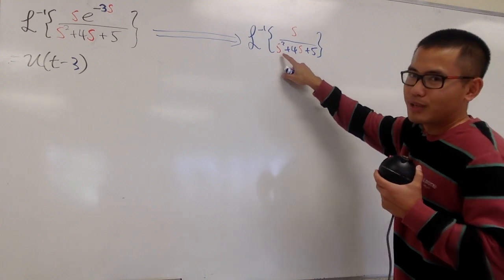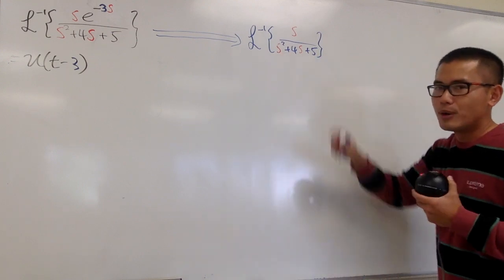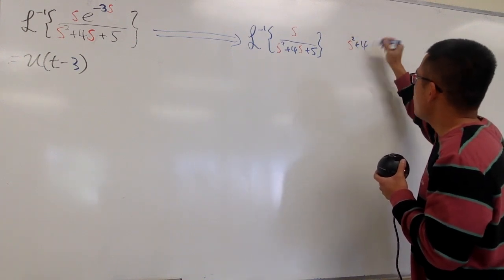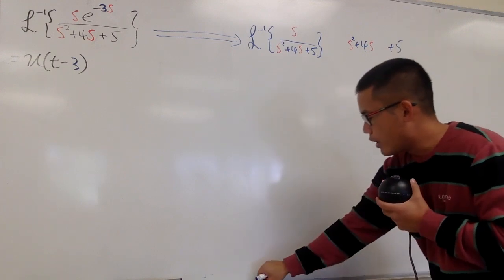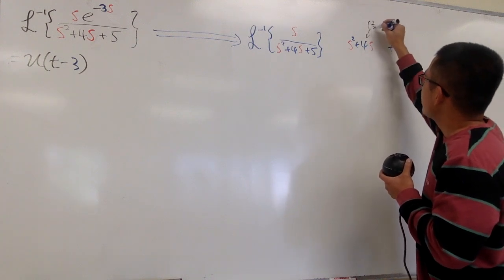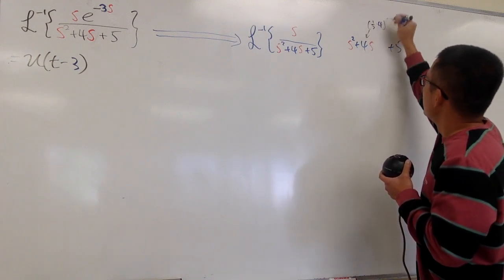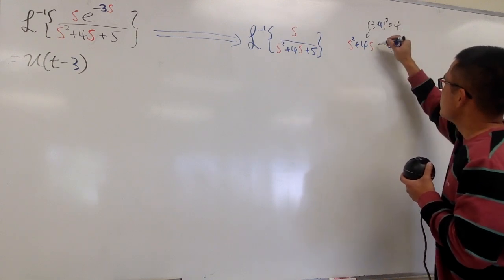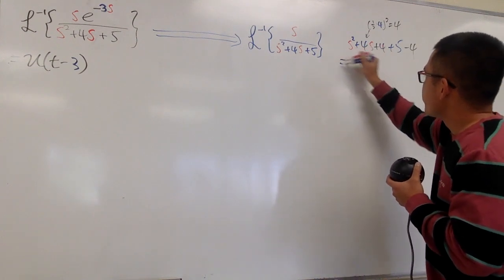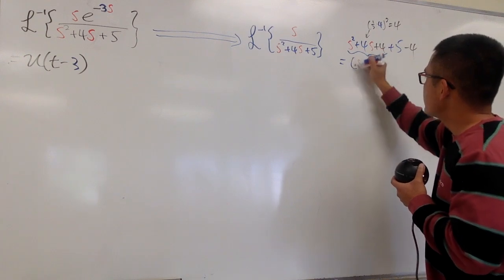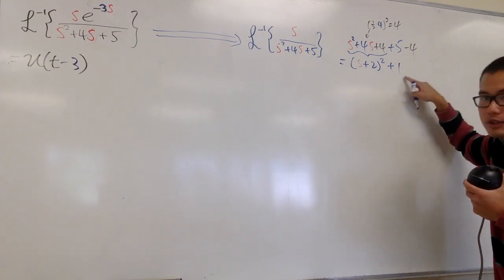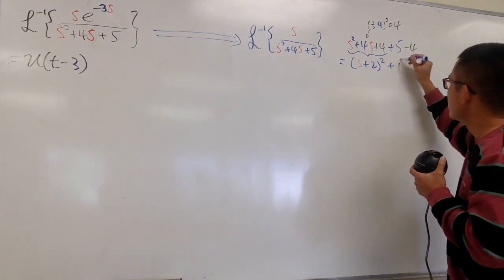The denominator is not factorable and has no real roots, so we complete the square. We have s squared plus 4s, leave a space, plus 5. Take one half of 4, which is 2, and square it to get 4. Add 4 and subtract 4. The first three terms give s plus 2 squared, and 5 minus 4 is 1, so we have s plus 2 squared plus 1 squared.